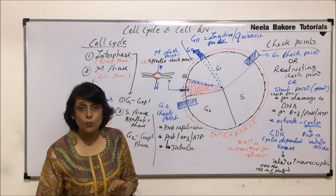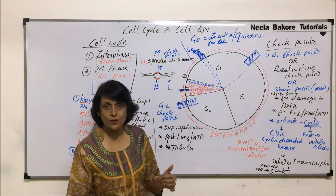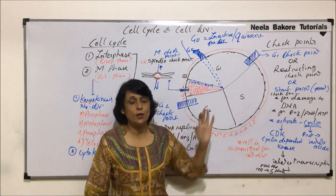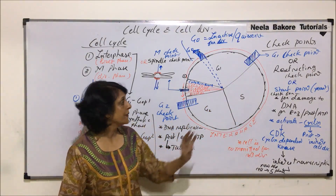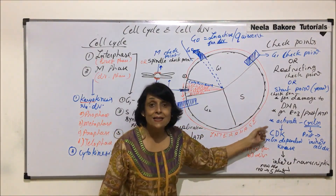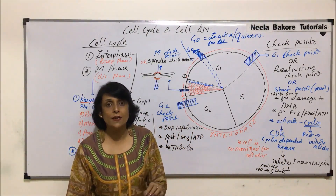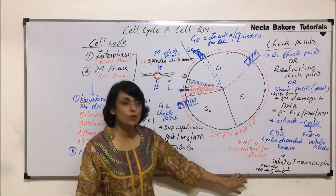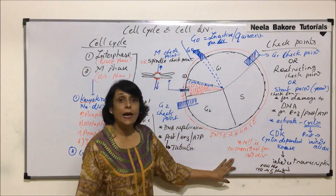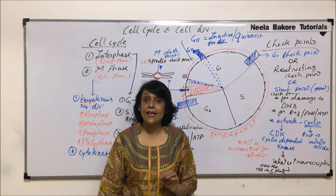The G1 checkpoint is also known as the restriction point in higher eukaryotes. In yeast, the term used is start point. The G1 checkpoint checks for damage to DNA; if DNA is undamaged and all preparation — enzymes, proteins, ATP — is complete, then cyclin gets activated. This activated cyclin initiates transcription, which is a guarantee that the cell enters S phase. When the cell completes G1 successfully, we say it is committed for cell division.